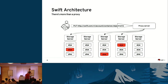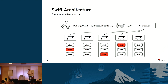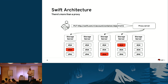Let's have a short look at the architecture behind Swift. As an application developer, most of the time you're talking to the proxy server — the entry point to the object storage system. If you want to store an object, you send a PUT request with an account name, a container name, and an object name. The proxy server then creates three copies on different disks and different backend storage servers, so even if one or two servers or disks fail, your object is still readable.